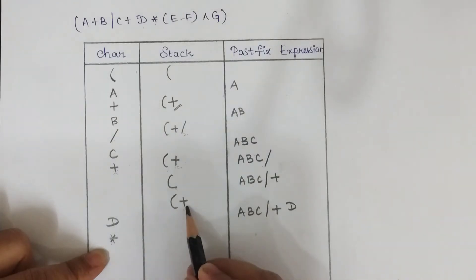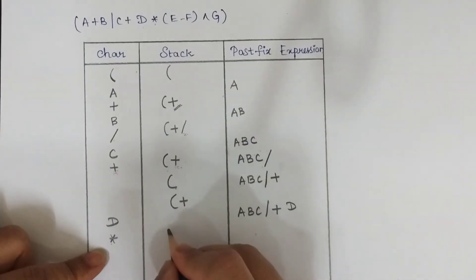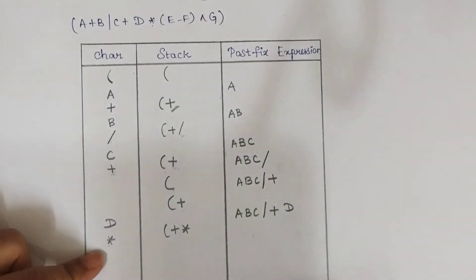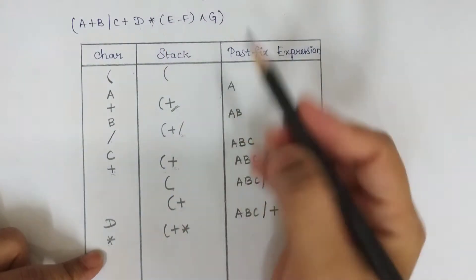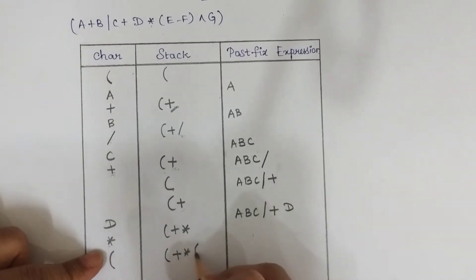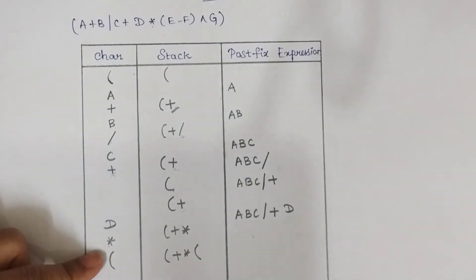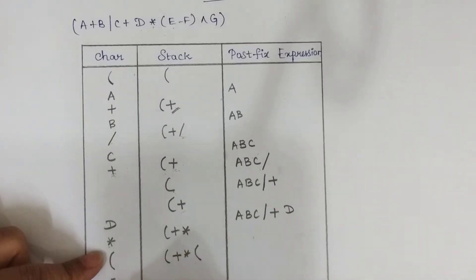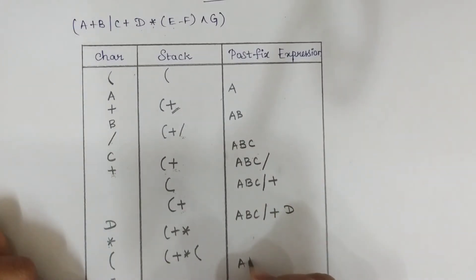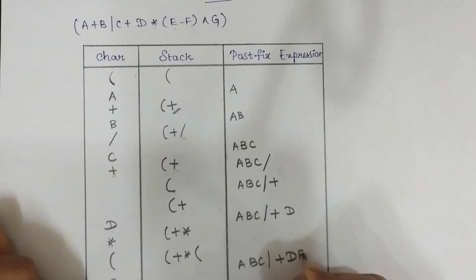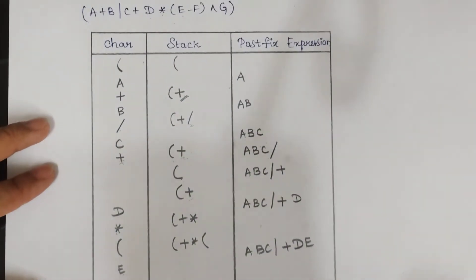Multiplication has higher precedence than plus, so push it into the stack. The next character is open parenthesis — do not check any condition, directly push it into the stack. The next character is operand 'E', which should be appended to the postfix expression.